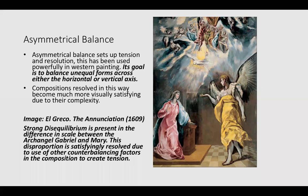How does this play out in painting? We can look at that in action in a very powerful image by El Greco. It's called asymmetrical balance. Asymmetrical balance sets up tension and resolution, and has been used powerfully in Western painting. Its goal is to balance unequal forms across either the horizontal or vertical axis. Compositions resolved in this way become much more visually satisfying due to their complexity. The image here is El Greco's Annunciation. The strong disequilibrium is present in the difference in scale between the Archangel Gabriel on the right and the Virgin Mary on the left.